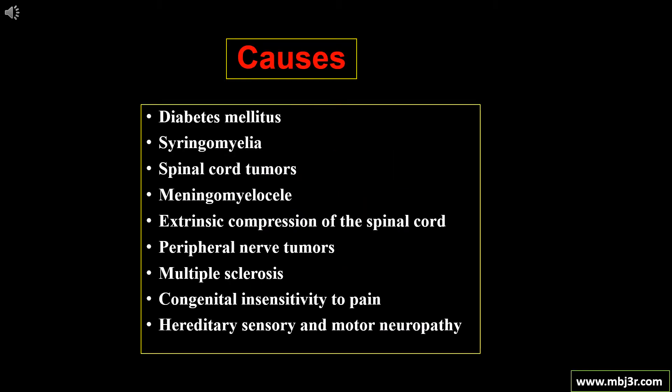Causes of neuropathic osteoarthropathy — nowadays the most common cause is diabetes mellitus. Other causes include syringomyelia, spinal cord tumours, meningomyelocele, extrinsic compression of the spinal cord, peripheral nerve tumours, multiple sclerosis, congenital insensitivity to pain, and hereditary sensory and motor neuropathy.